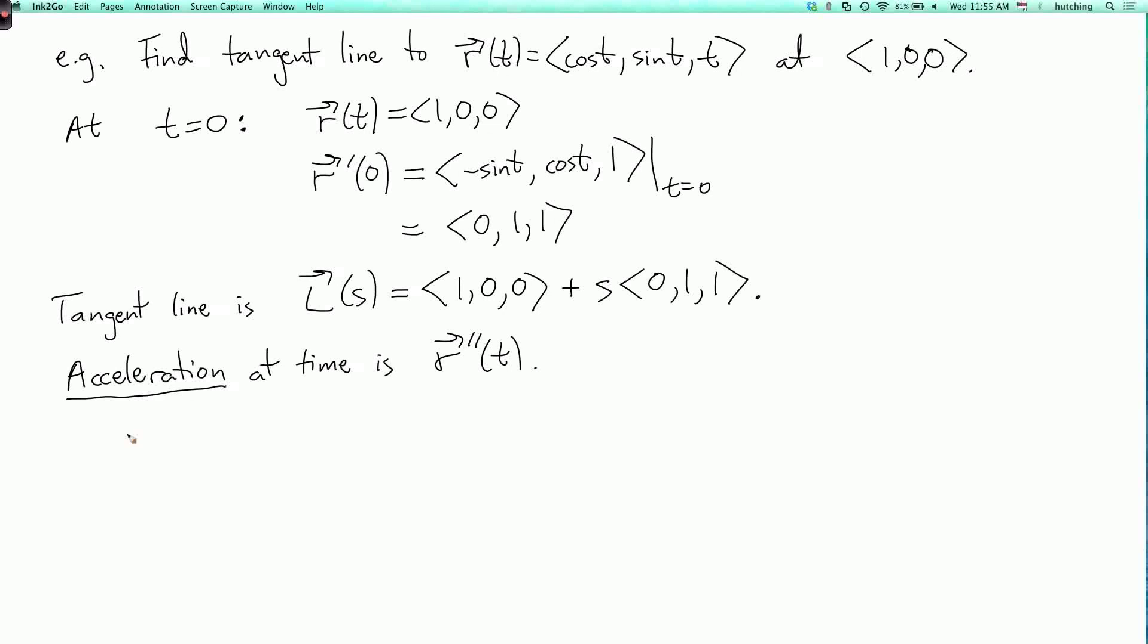So for example, this one's of practical importance, so let's consider R of t equals cosine kt, sine kt, zero. So this curve is just moving around the unit circle in the x-y plane at speed k.